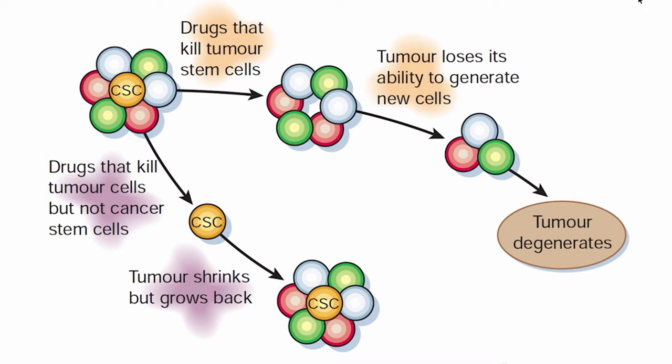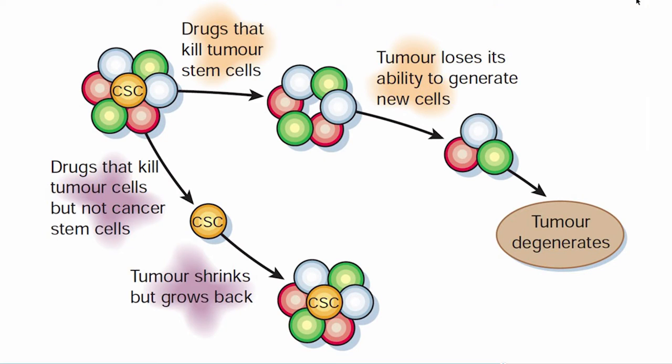An important point from the cancer stem cell hypothesis is that our current therapies — like radiation and chemotherapy — preferentially target rapidly dividing cells. So you may have a tumor with lots of rapidly dividing cells and a cancer stem cell that doesn't divide very much. You treat with radiation or chemotherapy, the rapidly dividing cells die, but the cancer stem cell survives and the tumor comes back. If we can target cancer stem cells, then when we eliminate those rapidly dividing cells, the tumor basically cannot come back, and we should get better outcomes.